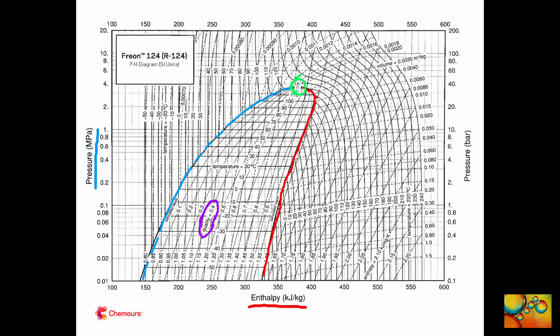Looking inside the dome, we have lines of constant quality. Quality is the ratio of the mass in the vapor phase to the total mass in the system — in other words, it's the vaporized fraction. Next to the saturated liquid line, the quality has a small value close to zero. Inside the two-phase region, next to the saturated vapor line, quality has a value close to one.